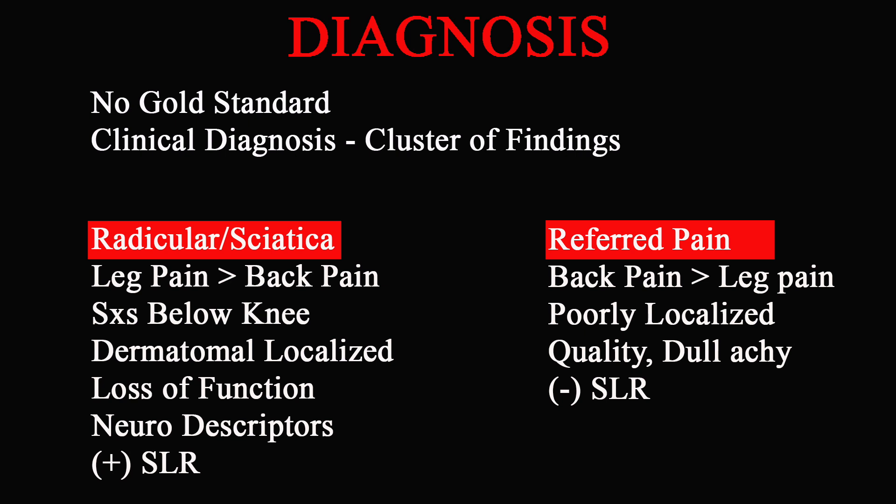If it's more referred pain, the findings would probably be more like low back pain is worse than leg pain, it's poorly localized and non-dermatomal, the quality of pain is reported as dull or achy, and the straight leg raise test is negative. Looking at the dermatomal picture, the L4 nerve root radiates the anterior leg, the L5 nerve root radiates the lateral leg and the toe, and the S1 nerve root — the most common — covers the posterior leg and calf. Based on these different innervations, we can help correlate our diagnosis. It's important to note there is variance in everyone's dermatomal patterns, but that's beyond the scope of this video.